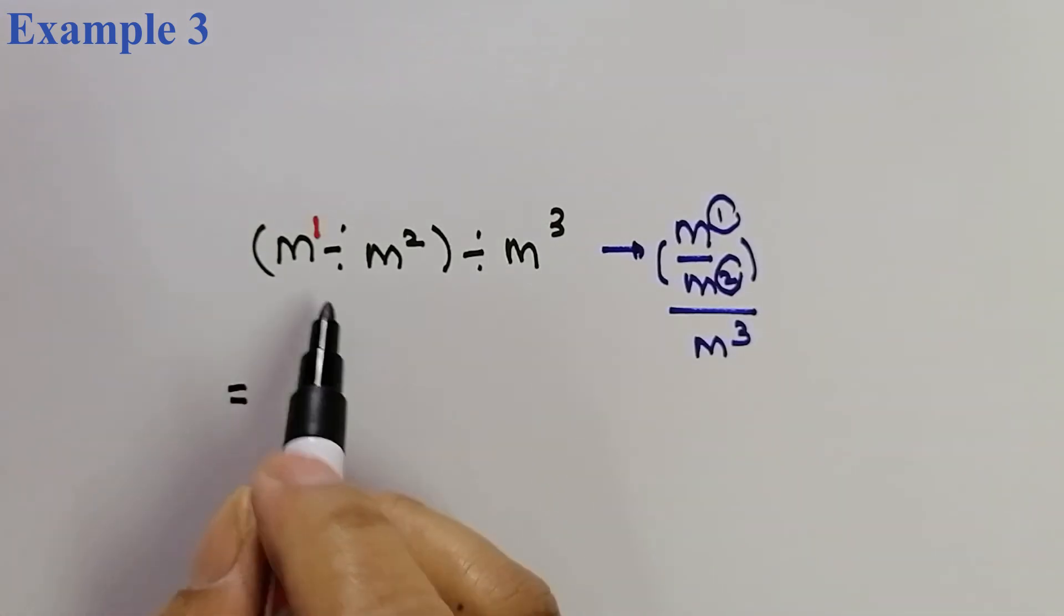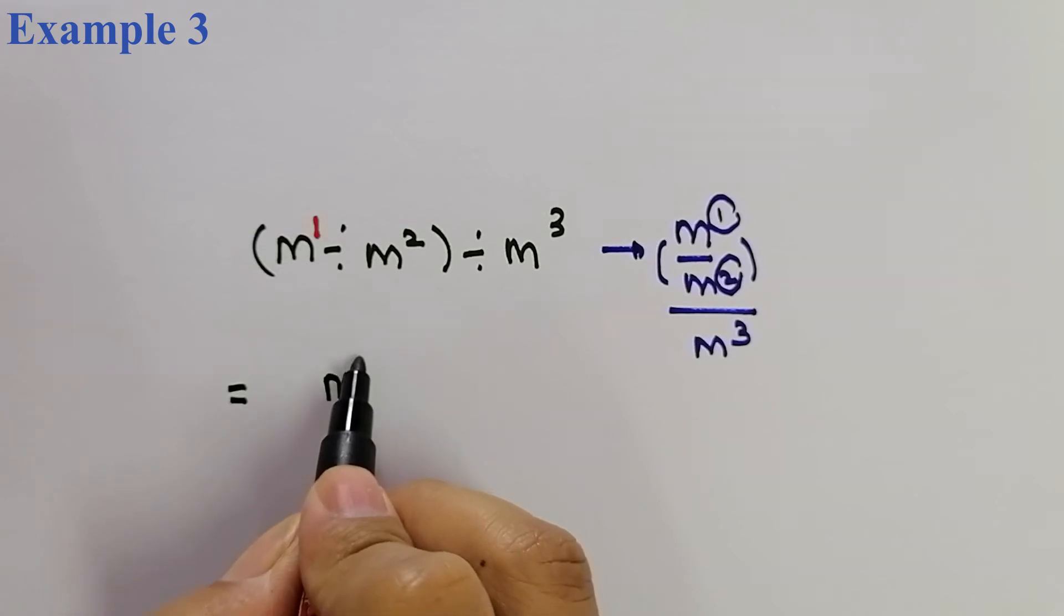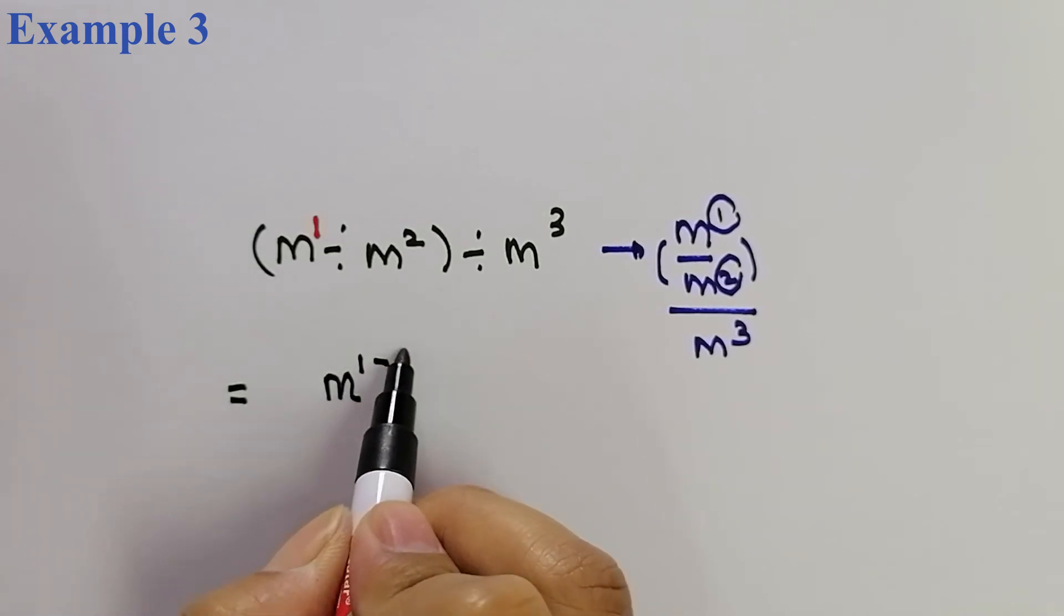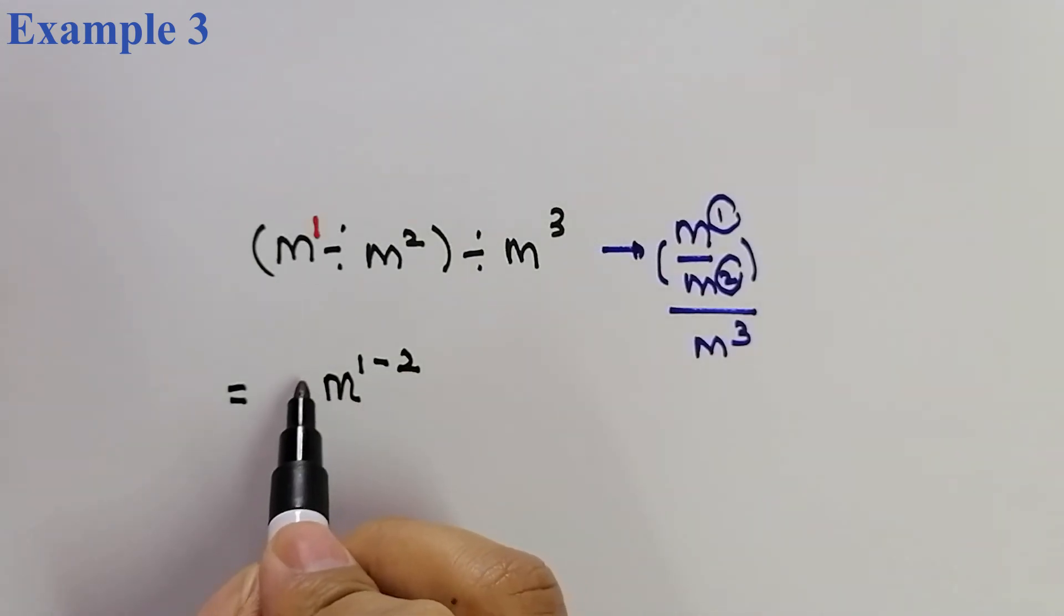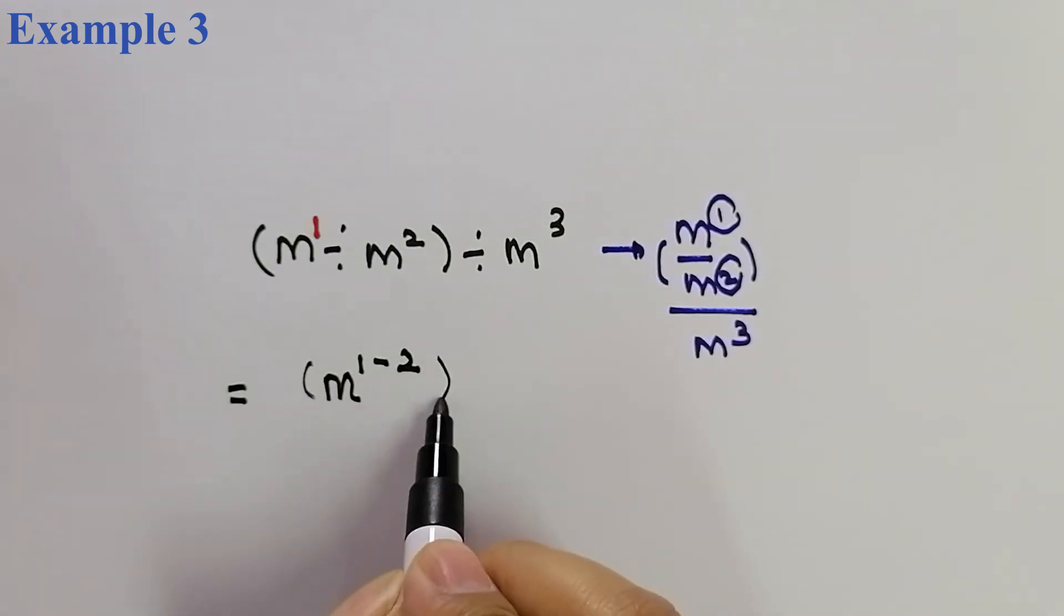So, first of all, kita akan buat yang dekat dalam bracket. M power of 1 tolakkan dengan 2 because division. So, kita kena buat substraction terlebih dahulu.